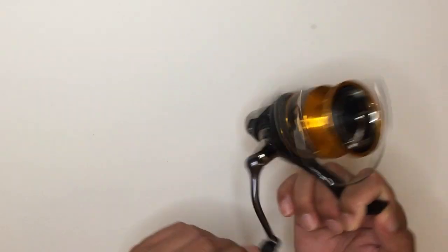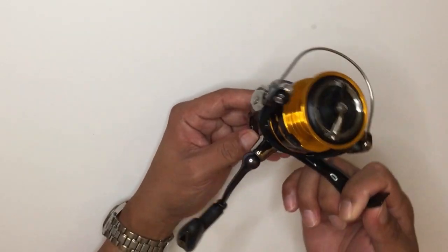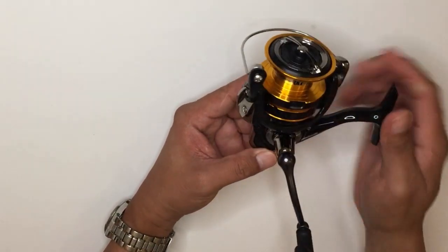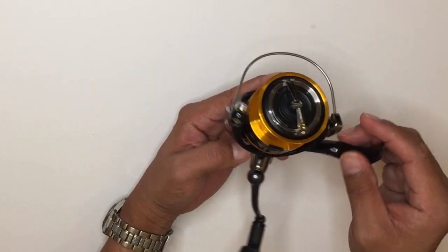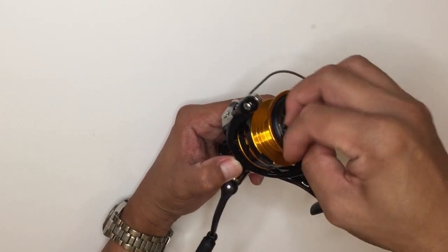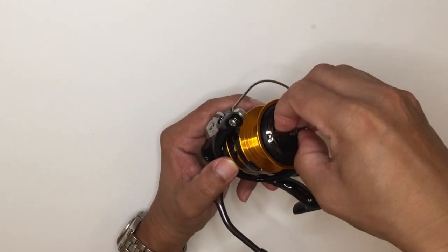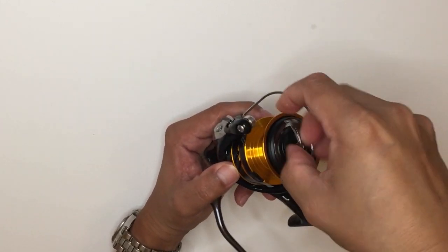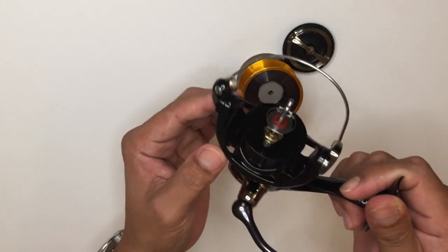Now for the features: Daiwa calls this the limited edition black and gold BG color. We have the graphite rotor and also the air rotor system of Daiwa. This is really a new technology for Daiwa to decrease the weight of the reels.